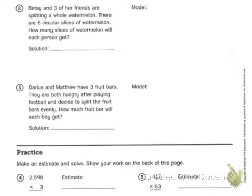Let's start, let's set up number two together. Betsy and three of her friends. So first things first, how many people? You have Betsy and then three friends. So Betsy, friend one, friend two, friend three. So that equals how many total? Four. So there are four friends. That is my denominator. It says there are six circular slices of watermelon. How many slices of watermelon will each person get?